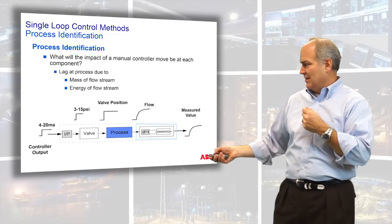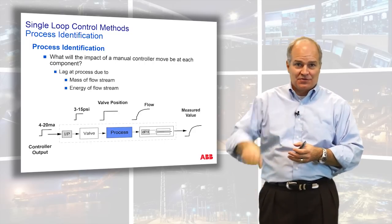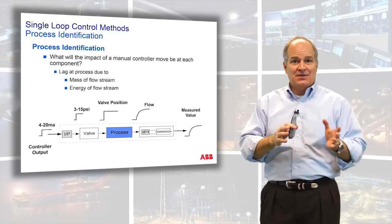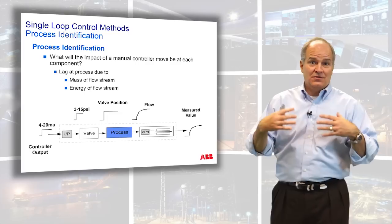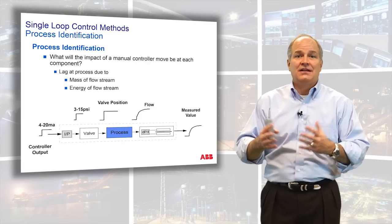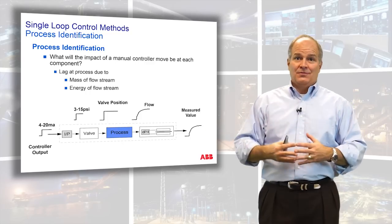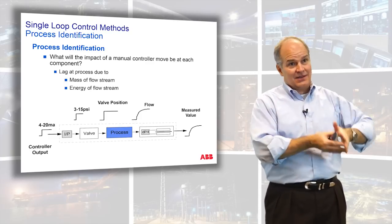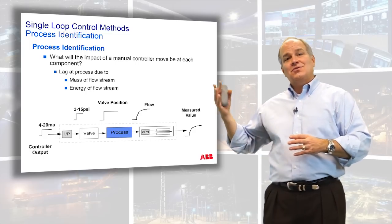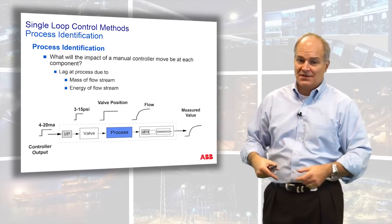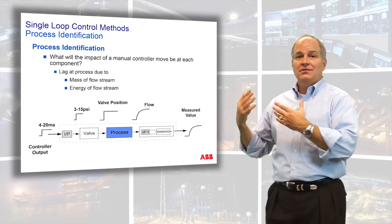Imagine you have a transducer with a zero and a span, and your operator calls saying the measurement isn't reading correctly. You pull out a screwdriver and adjust the zero and span until the measurement matches what the operator wants. How much validity does that calibration method have? Zero. The right way is to take it back to a bench test, set the zero, set the span, get the slope right, and get the calibration correct. In the control tuning world it's the same thing — if your operator says the tuning doesn't work, you can't just throw in numbers until they leave you alone. The same technique used to calibrate a transducer must be applied to tuning, and that involves a bump test.